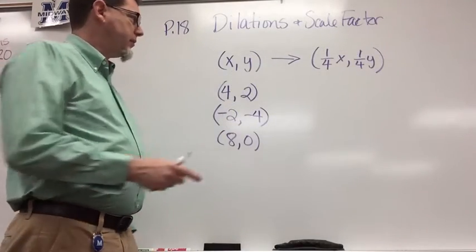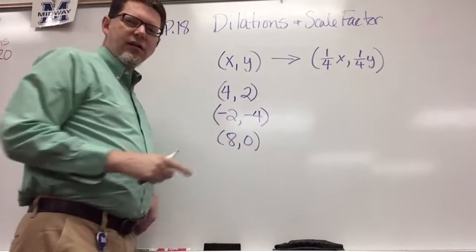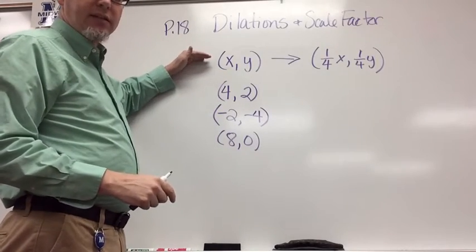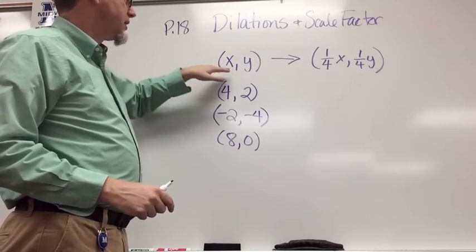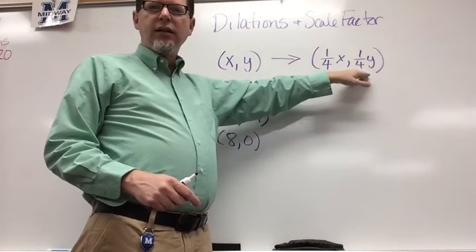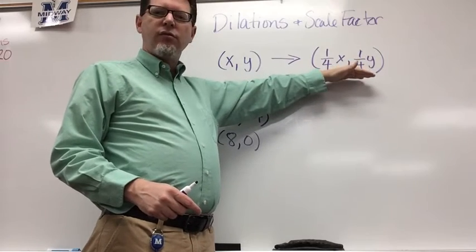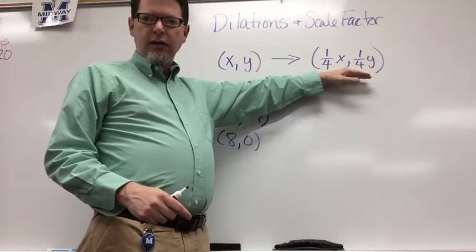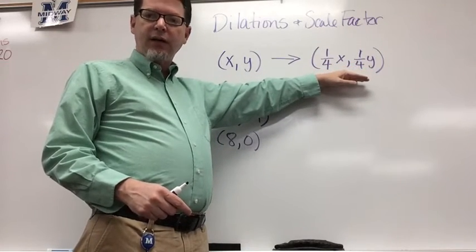Now we're going to mix it up a little bit. I'm given an algebraic phrase that tells me what I'm supposed to do. It says (x, y) dilated to (1/4x, 1/4y). That's telling me I'm going to create a reduction, and I'm going to have to multiply everything by 1/4.